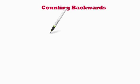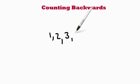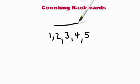So if we have the numbers 1, 2, 3, 4, and 5, if we count them up, 1, 2, 3, 4, 5, we're going forwards.